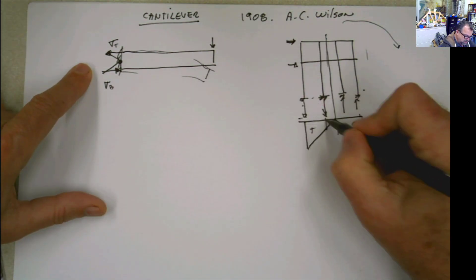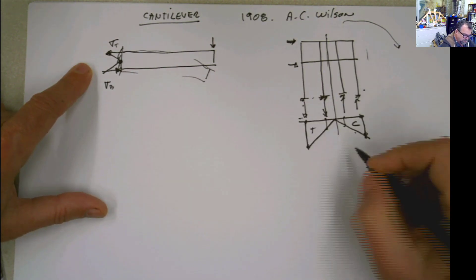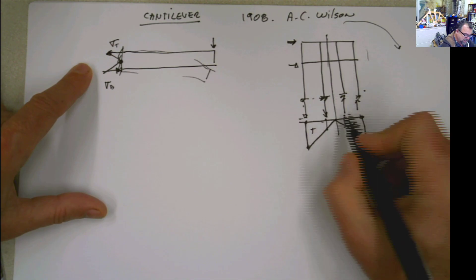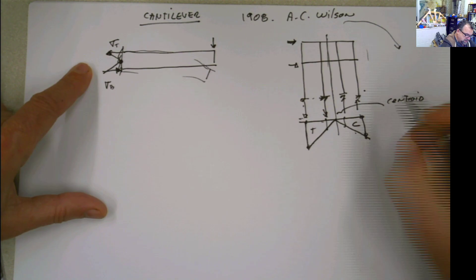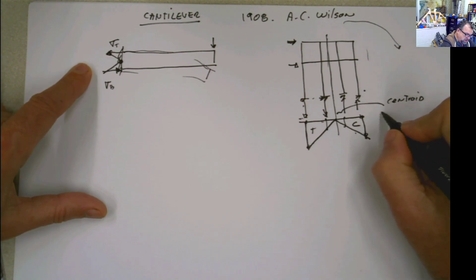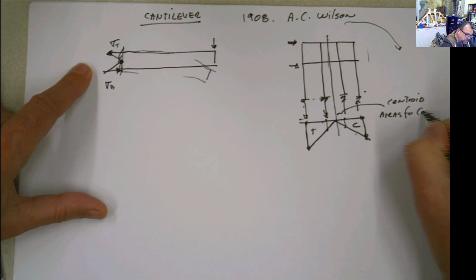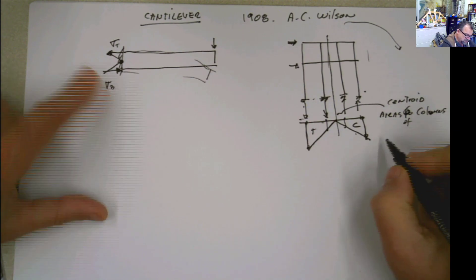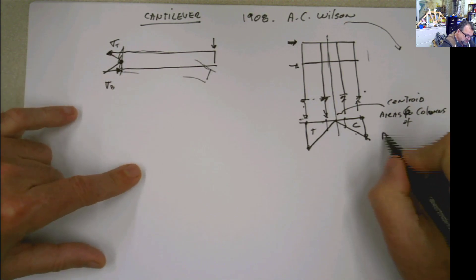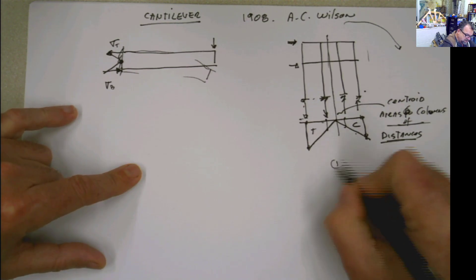Every one of the values at every one of the columns is going to be determined by how far apart they are from the centroid. And that centroid is going to be determined according to the areas of the columns and the distances. So the first step will be to find the centroid.